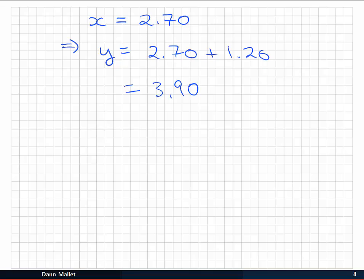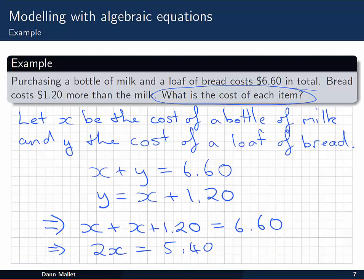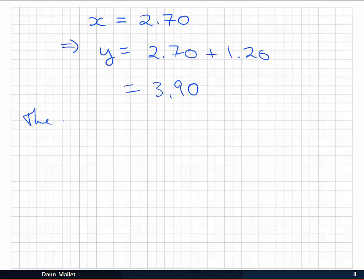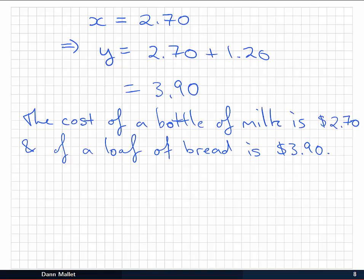So I've got my mathematical result. I should now express it in the correct form for the problem I started with. That means writing things down in a sentence. The cost of each item, essentially. The cost of a bottle of milk is $2.70, and of a loaf of bread is $3.90. Now the final step in that modelling procedure I showed you earlier was to go back and check those. I'm going to leave that one for you, to go back and check that those make sense with the given statements in the problem.